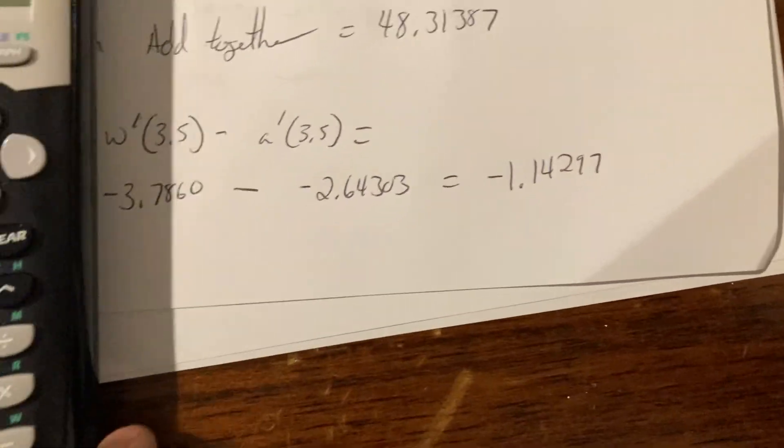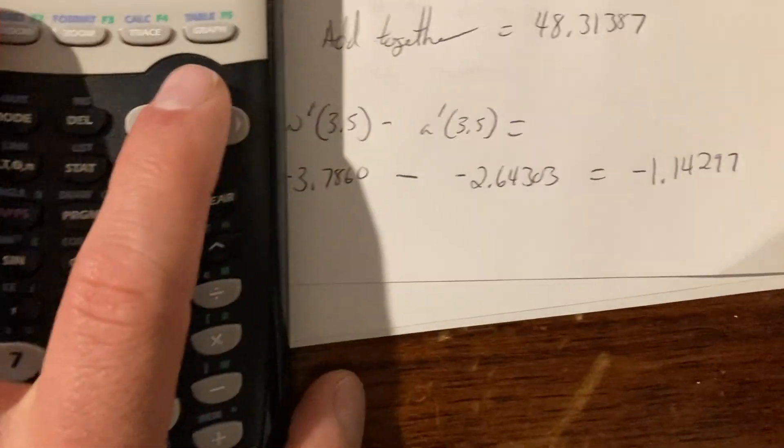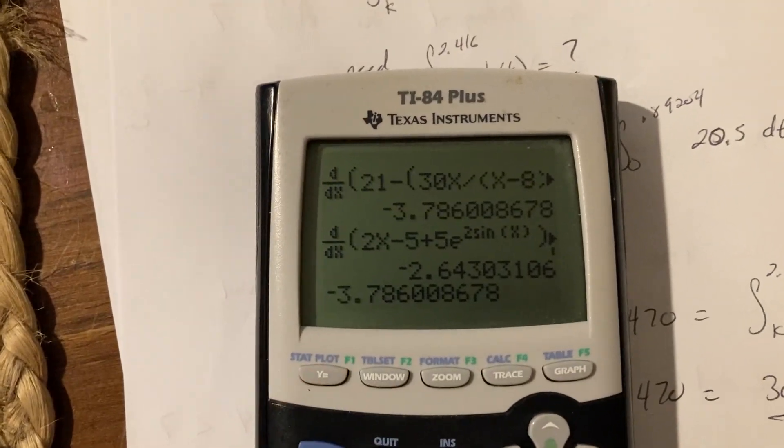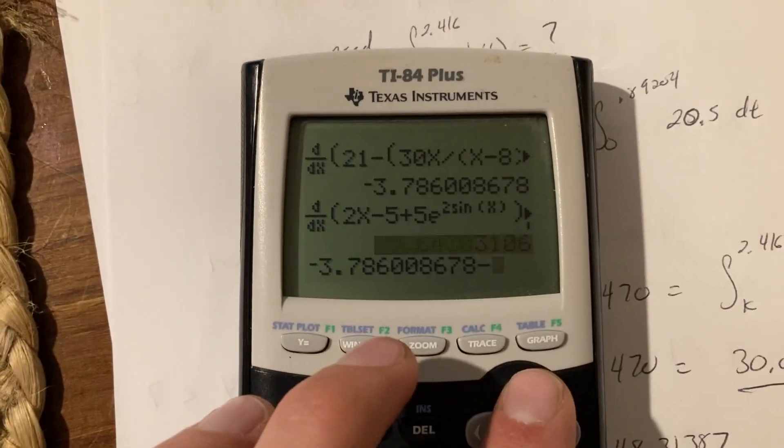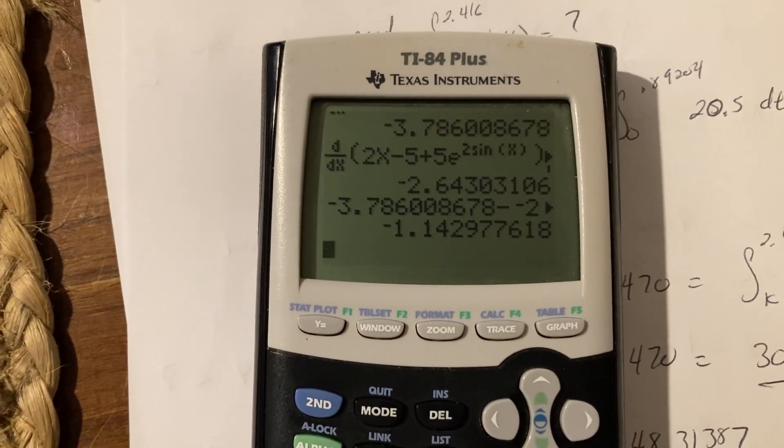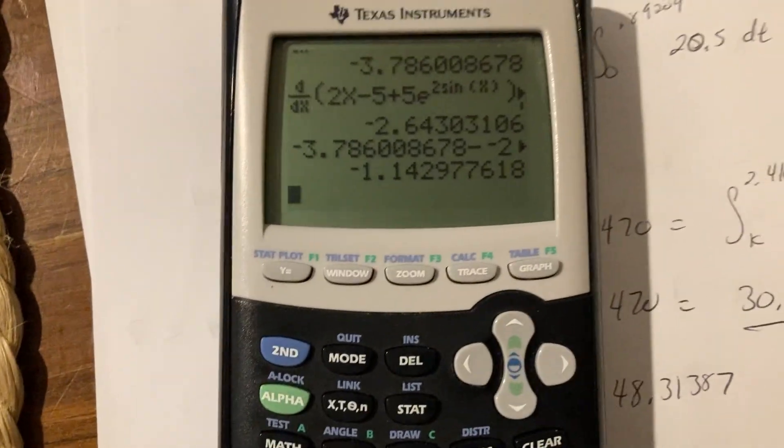Also negative, so I have a negative minus a negative, negative minus negative. Put those together, negative 1.14. Okay, now you can do that quickly in your calculator is this minus and just scroll up this, enter, boom, you got it. So there's that.